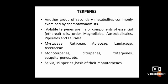Next, coming to terpenes. A second group of secondary metabolites commonly examined by chemotaxonomists are the terpenes. Volatile terpenes are major components of essential oils, which are characteristic of the orders Magnoliales, Austrobaileyales, Piperales, and Laurales. They are also reported in families Myrtaceae, Rosaceae, Apiaceae, Lamiaceae, and Asteraceae. Chemically, these compounds can be classified on the basis of their molecular structure into monoterpenes, diterpenes, triterpenes, sesquiterpenes, etc., and each group can be used for taxonomic purposes.